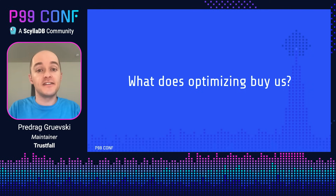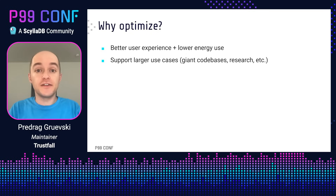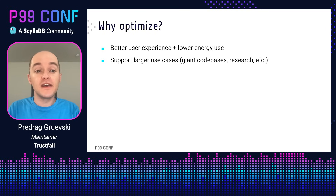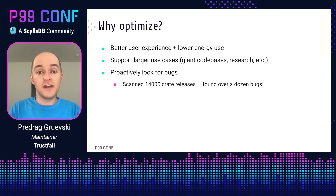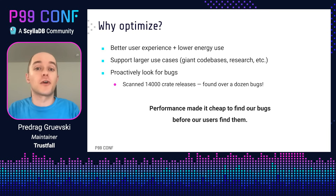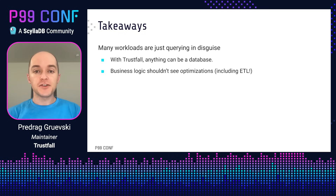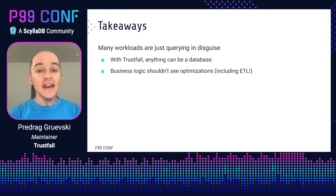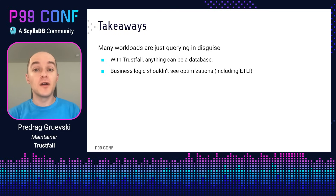So what does optimizing like this buy us? It buys us a few obvious things like better user experience, lower energy use, and support for larger use cases like large codebases or research of semver compliance across a wide range of crates. But it also buys us something non-obvious: it allows us to proactively look for bugs in our implementation. As part of our semver study, we scanned more than 14,000 crate releases, and in the process found more than a dozen bugs in Cargo Semverchecks. In a sense, performance made it cheap to find our own bugs before our users found them. In the big picture, there are two takeaways. The first is that many workloads are just database querying in disguise. With TrustFall, anything can be a database, and we can have declarative querying over any kind of data source. Our business logic should not be tied to our optimizations — that will allow us to have more robust, more flexible, more performant code.